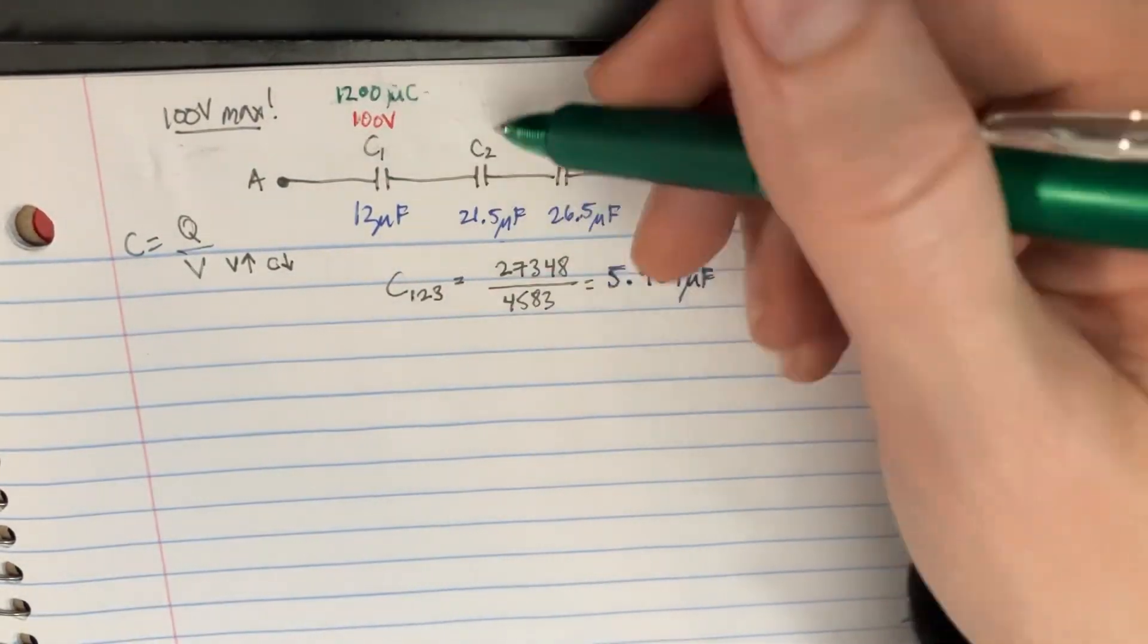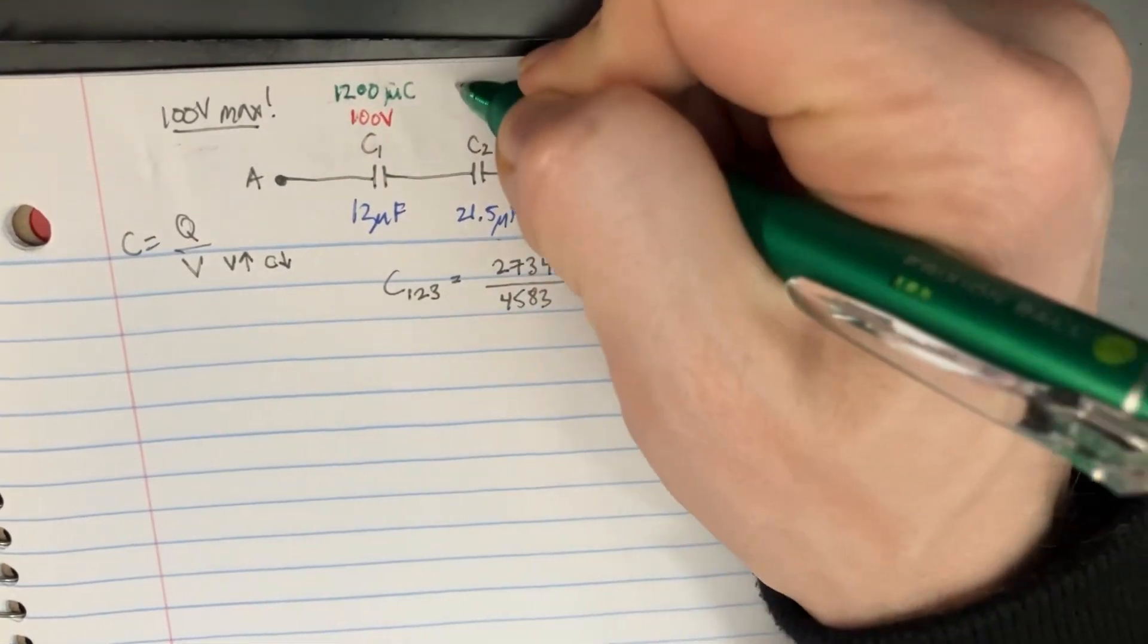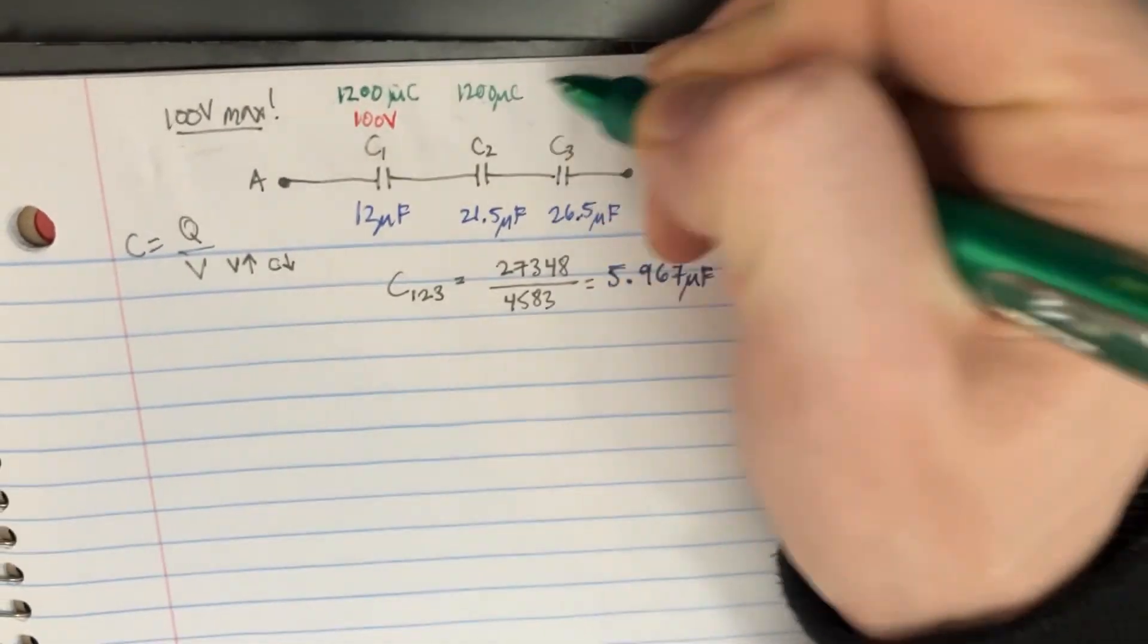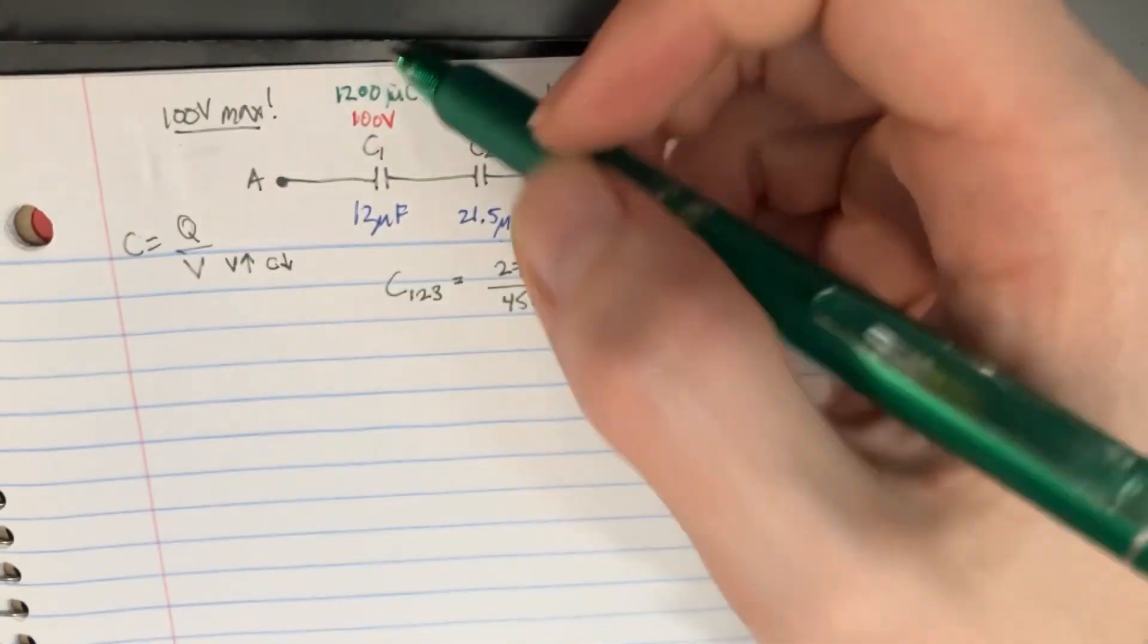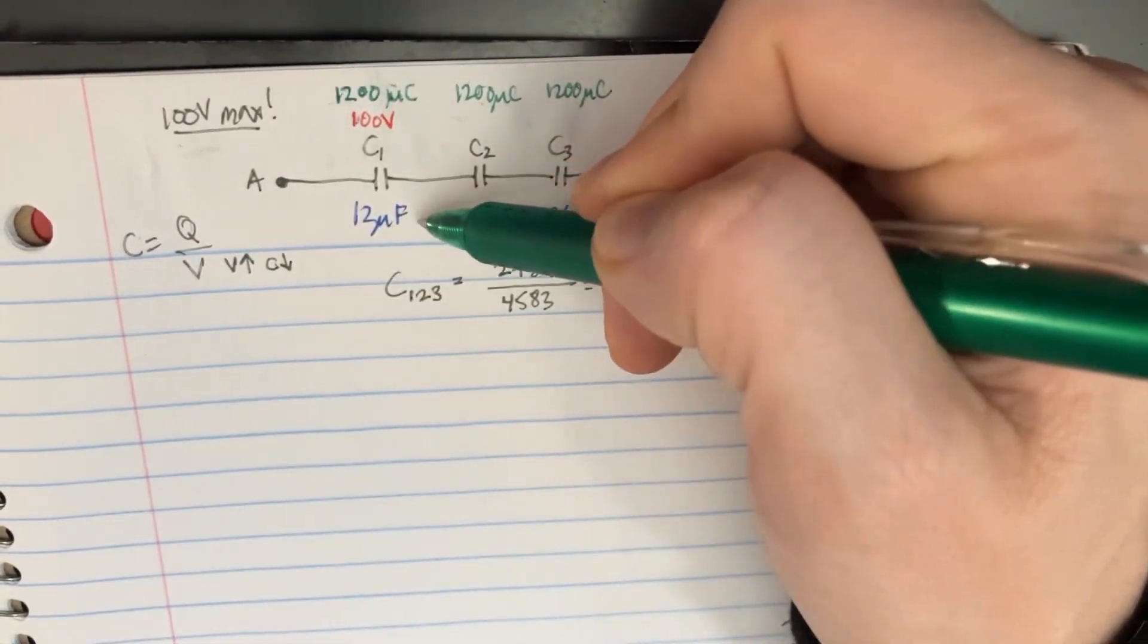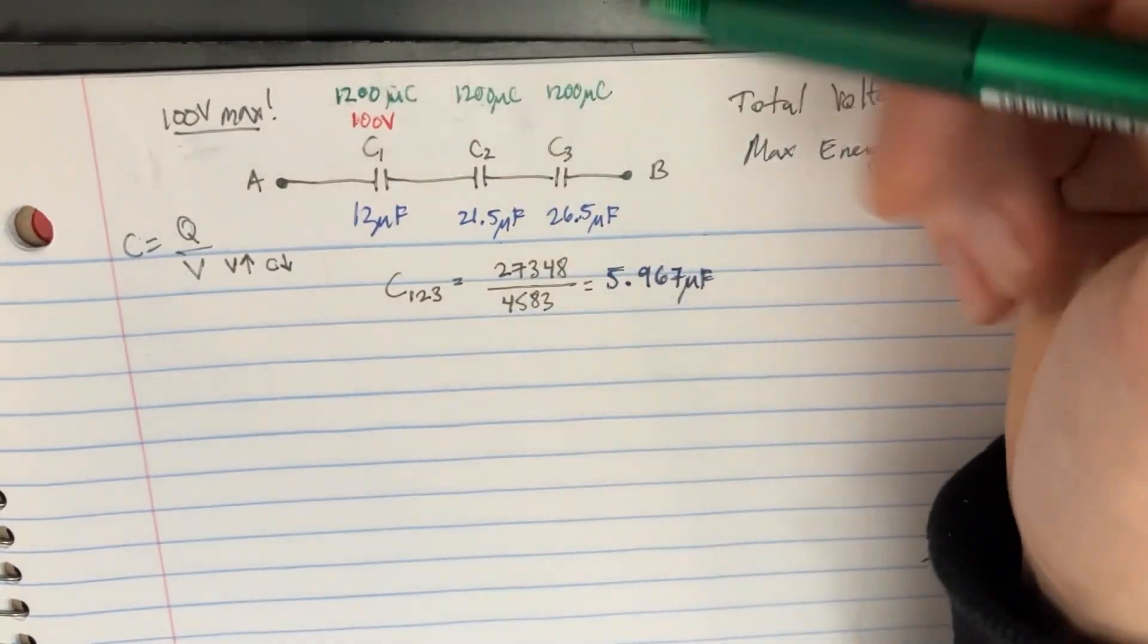Now because these are in series, that's actually going to be distributed across all of these. So we can actually put that right here, 1,200 microcoulombs. Remember, that was just gotten from this equation here. We've got the 12 microfarads here, and we're multiplying it by 100 volts. We get 1,200 microcoulombs.